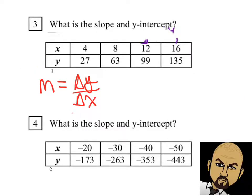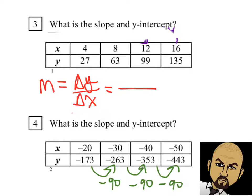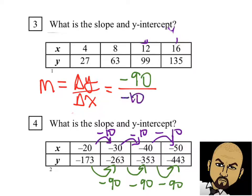Let's figure out the slope for the next table. The change in y over the change in x: as we move to the right, the y values are getting smaller, so the rate of change is negative — negative 90. The x values are also getting smaller, so the change in x is negative 10. Negative divided by negative is positive, and 90 divided by 10 is 9. So our slope is positive 9.